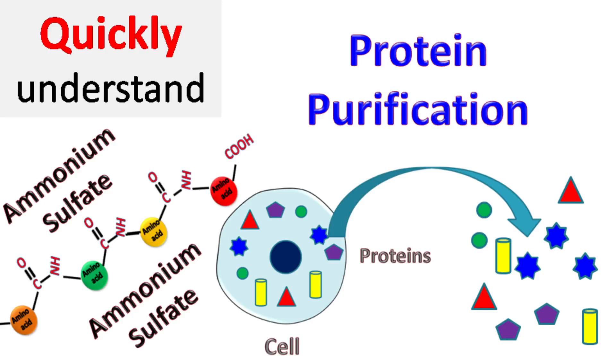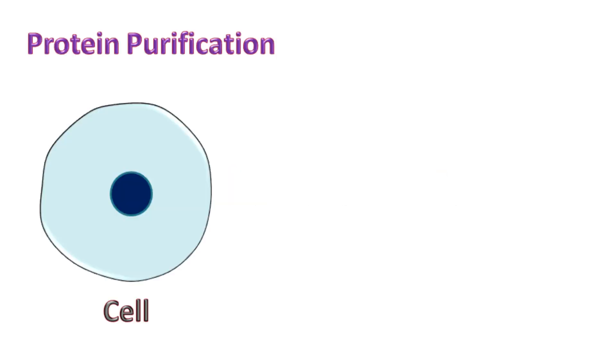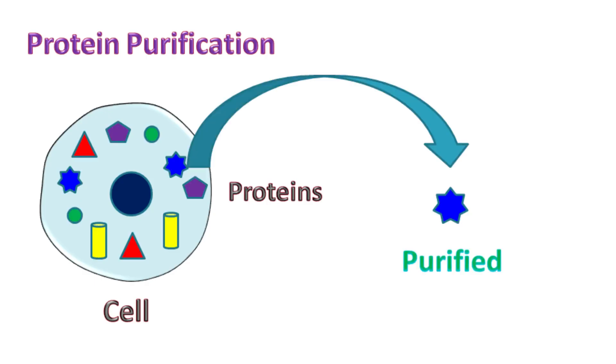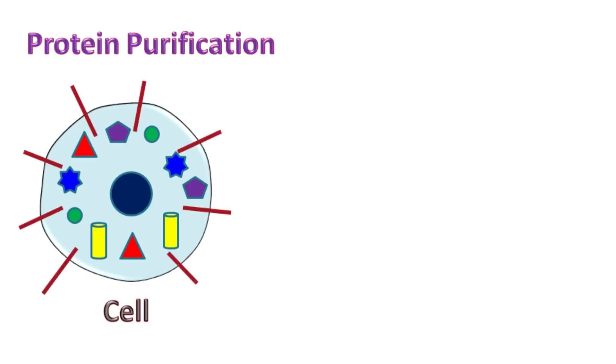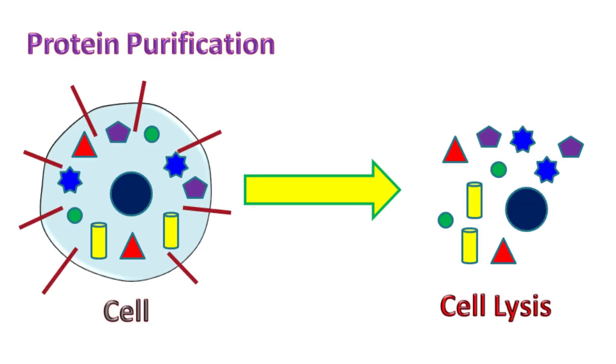Hey everyone, quick biochemistry basics here. Let's talk about purification of proteins. In order to study a particular protein present in the cell, the protein must be purified. The first step in protein purification involves lysis of the cell. Cells are usually lysed by treating them with detergents.